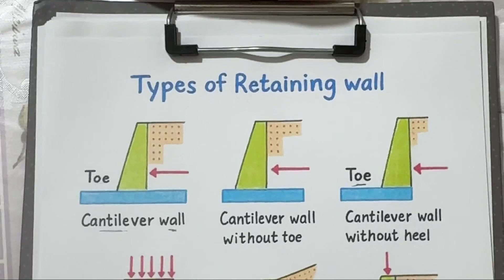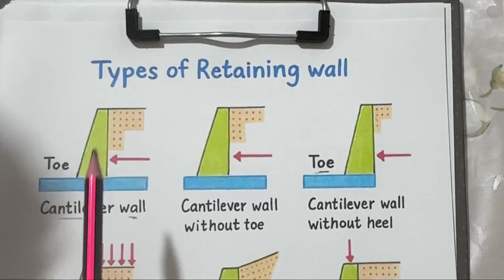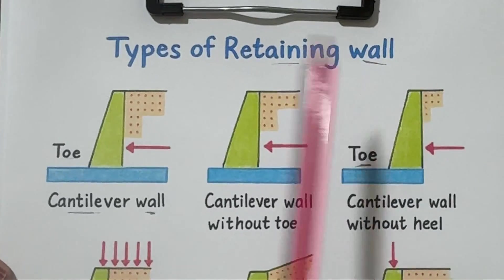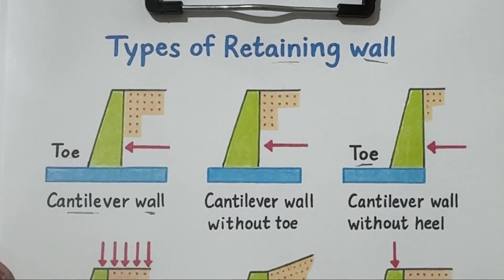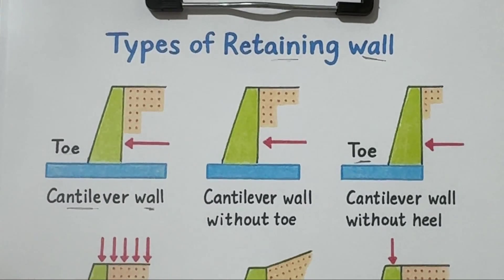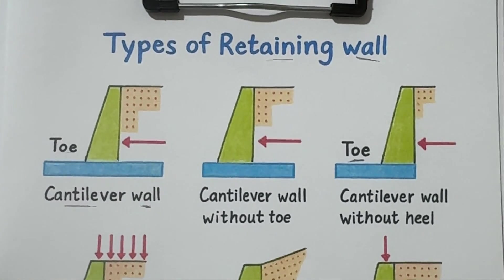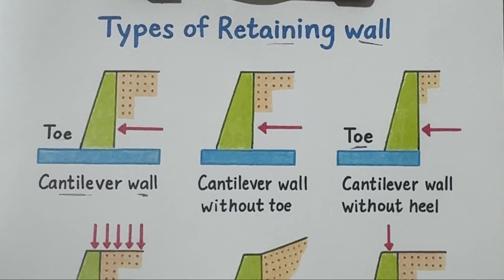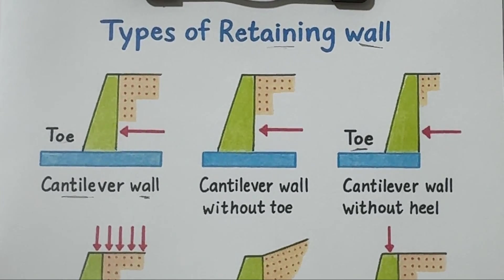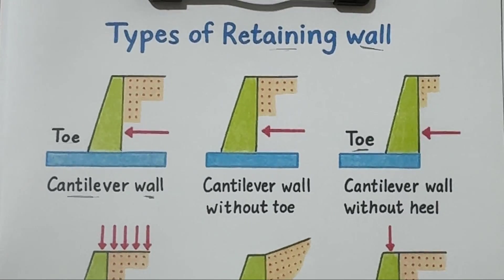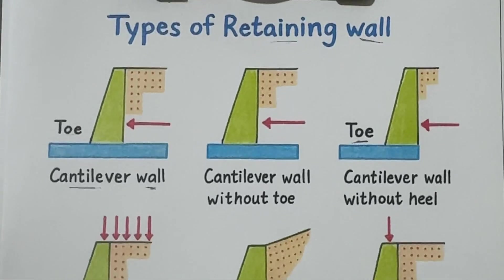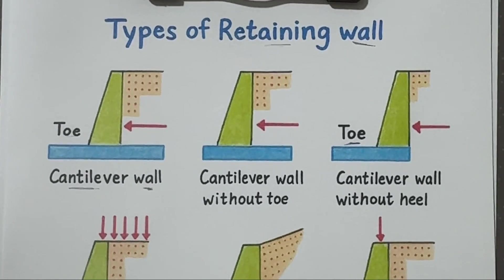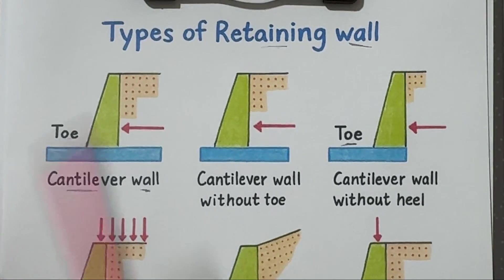Hi everyone. In this video we are going to look at the different types of retaining wall — the structures that hold back soil when there's a change in ground level. You will see them everywhere: along highways, in basements, around bridges, and even in gardens. Let's go through each one step by step.